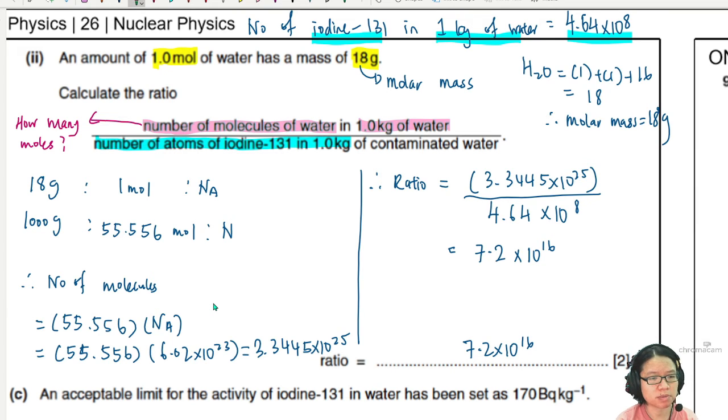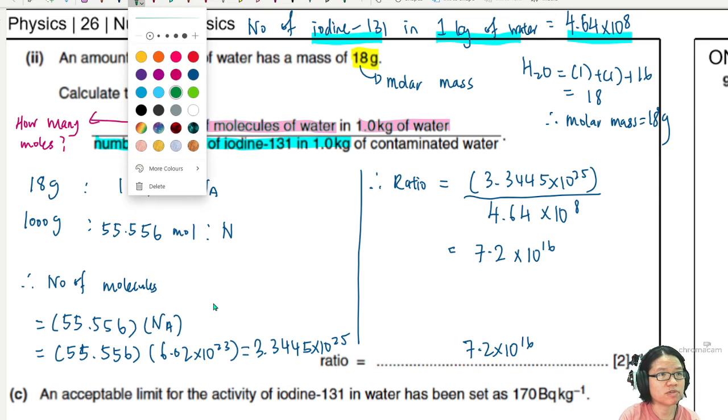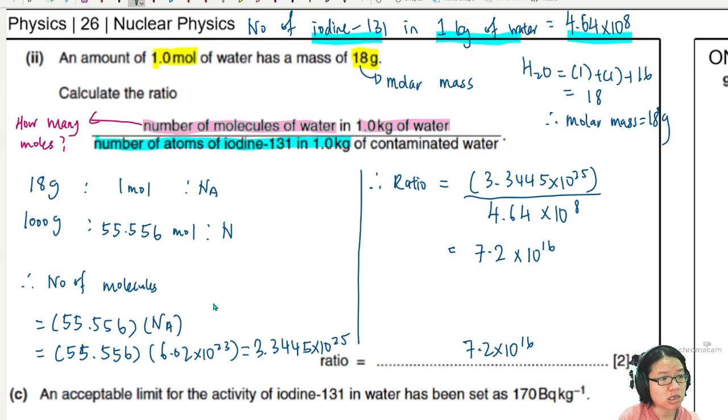If you multiply this and show this multiplication, I think it would be safer to write 1000 over 18 times NA instead of 55.56. So 1000 over 18 times NA is one mark - this is your C1. But I think most examiners will accept if you've shown the ratio. Or if you're feeling insecure, write it as 1000 over 18 times NA.